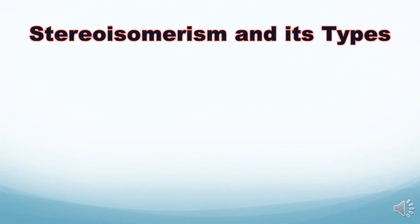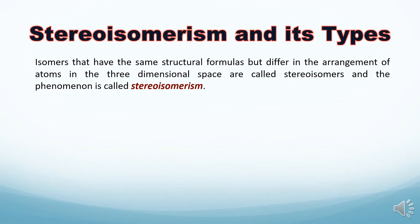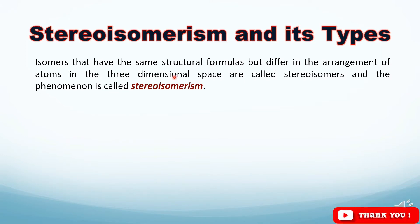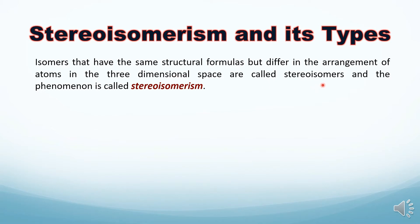So what is stereo isomerism? Isomers that have the same structural formulas but differ in the arrangement of atoms in three-dimensional space are called stereo isomers, and this phenomenon is called stereo isomerism. These isomers have the same structural formula, but their arrangement of atoms along the x, y, and z axes is different, and we call them stereo isomers.